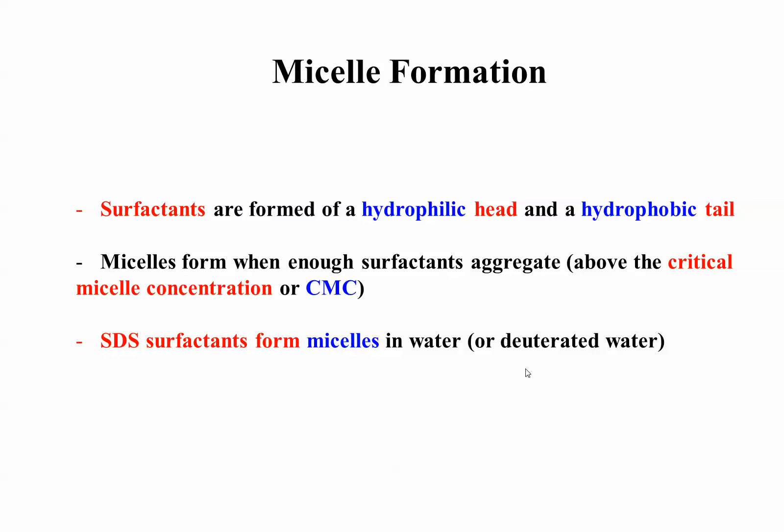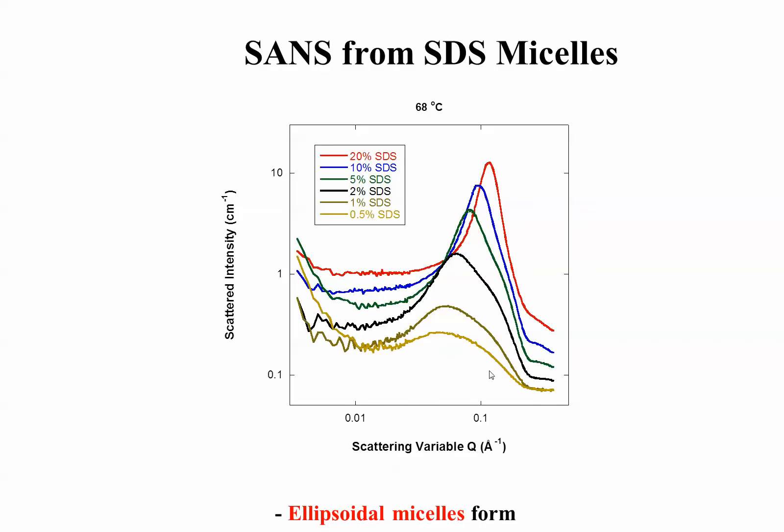STS surfactants form micelles in water, deuterated water, and this is a SANS spectrum, for example, for these different volume fractions at fixed temperature. So, you see that when you increase the volume fraction of STS, the interparticle peak increases and moves to the right. In other words, the interdistance becomes smaller and smaller because there are more and more micelles. So, one can get a hint here. There is a peak and there is a shoulder. In other words, there are two sizes involved. There are ellipsoids and we have models for ellipsoidal particles.